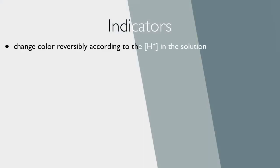Indicators are what we use to recognize acidic and basic solutions. They change color reversibly according to the concentration of hydrogen ions in the solution. Individually, they're not very good at distinguishing acid or base strength. They just tell us whether it is an acid or a base.